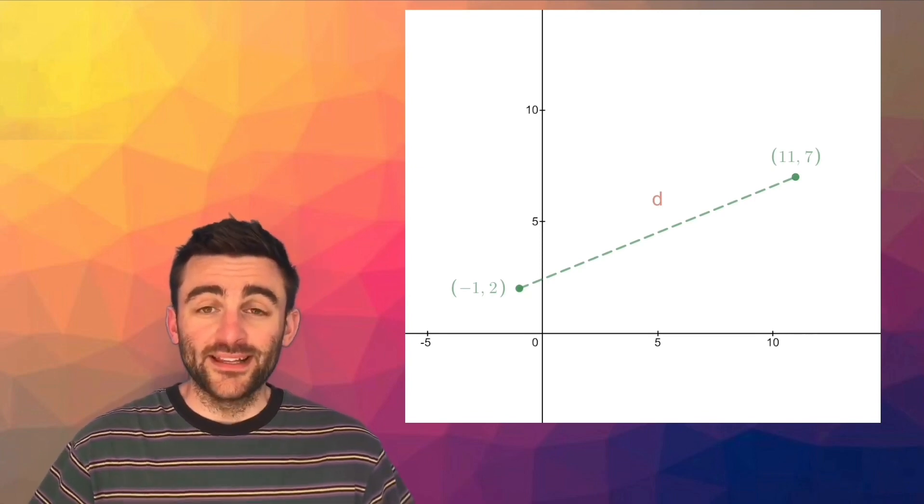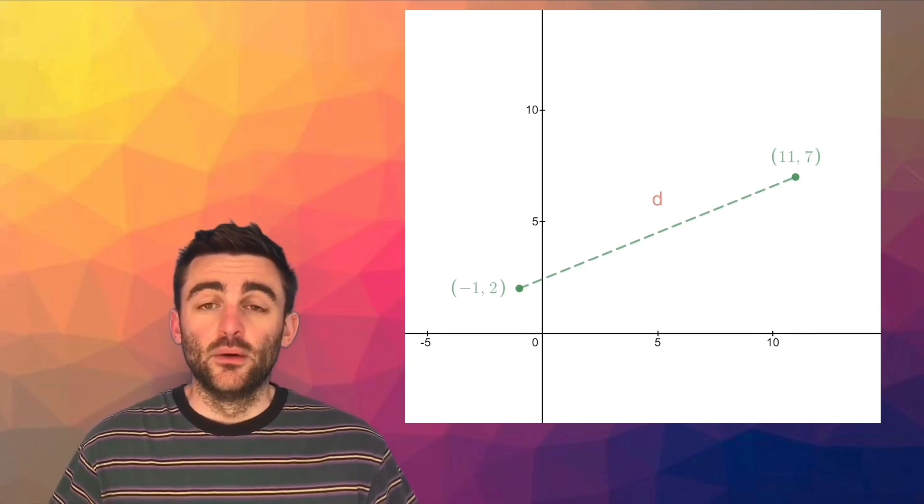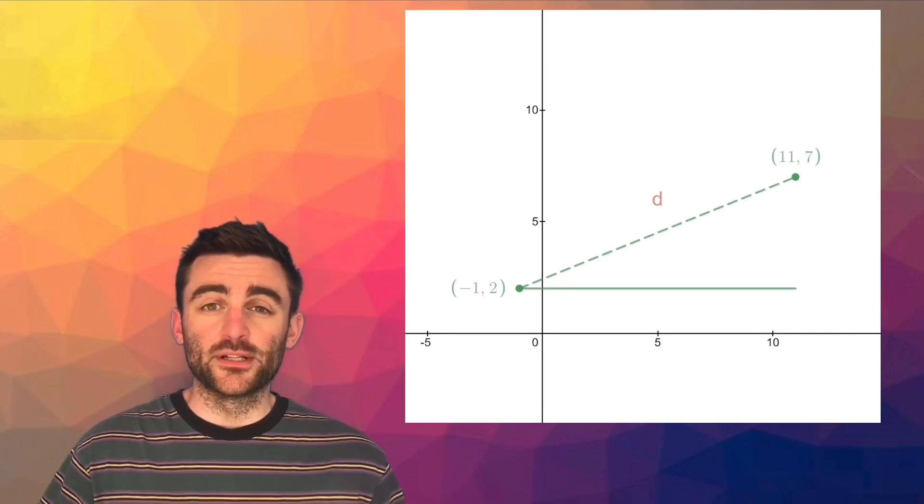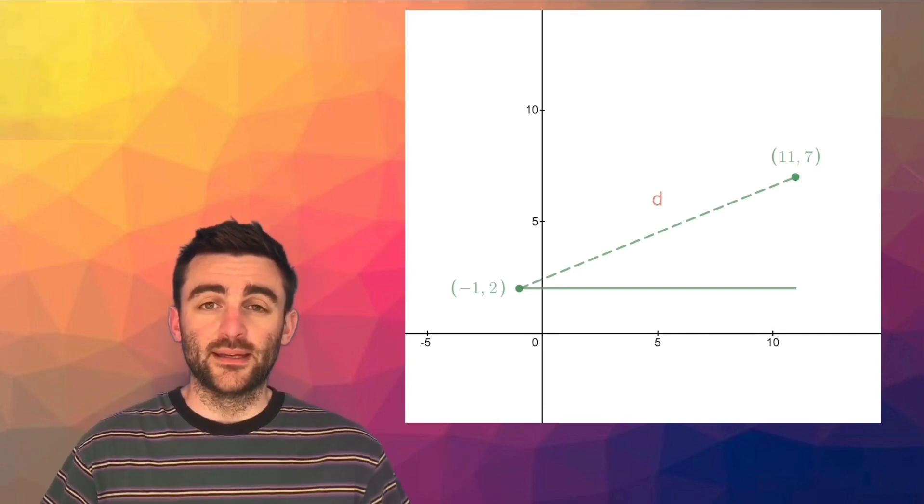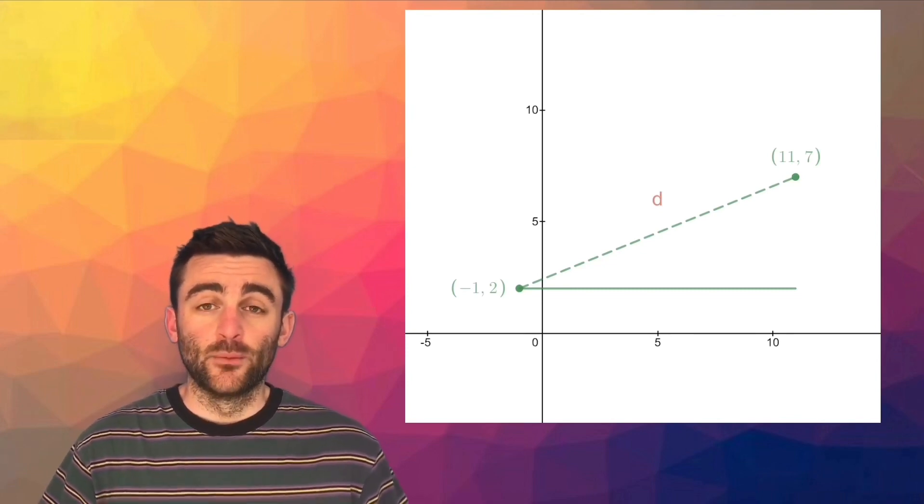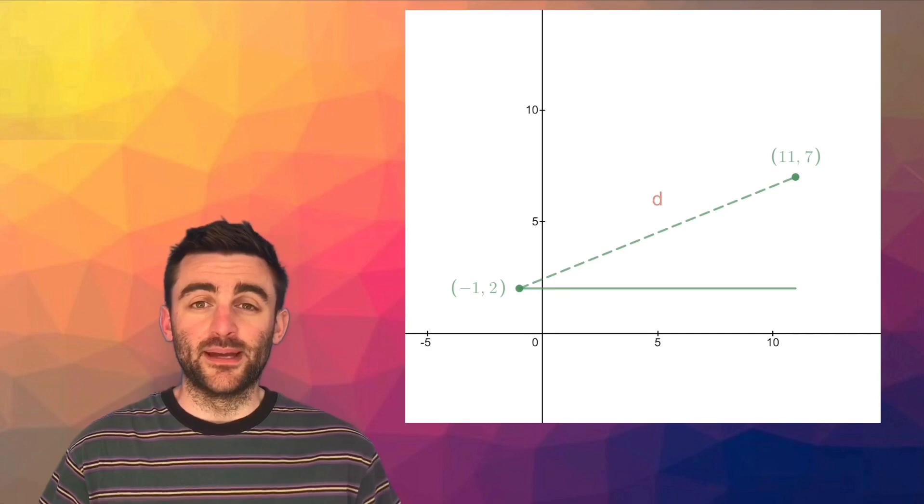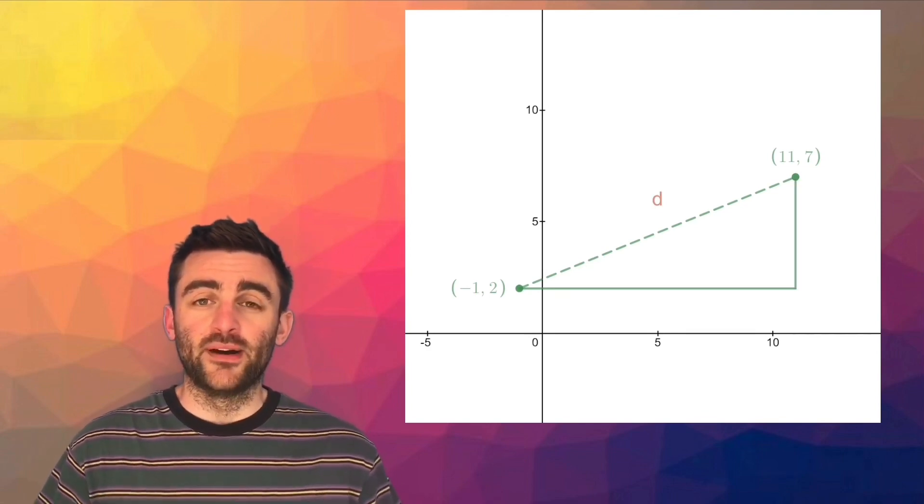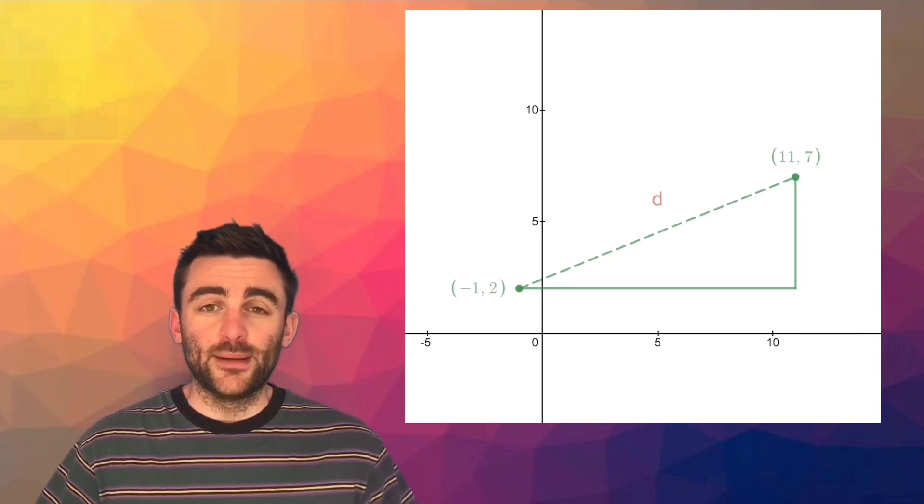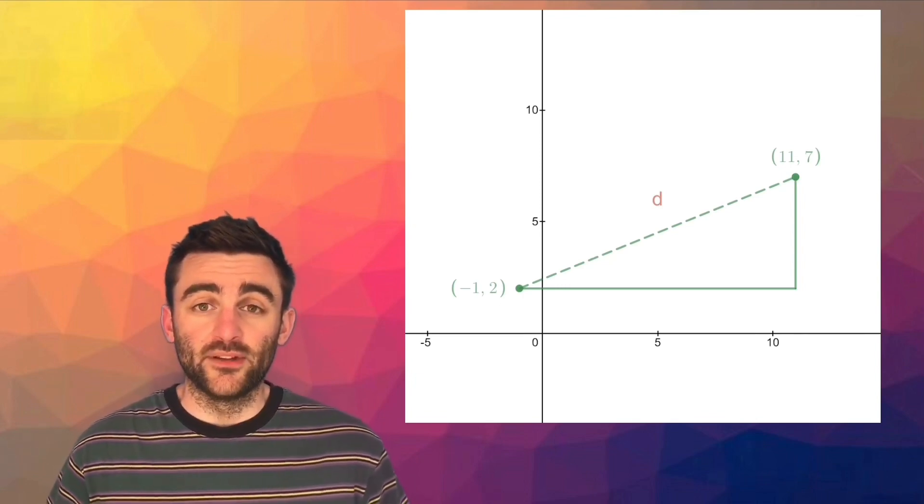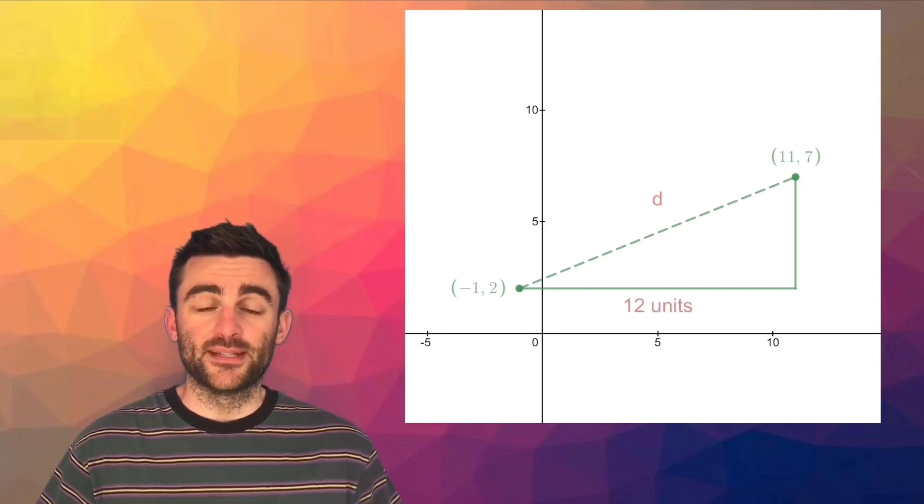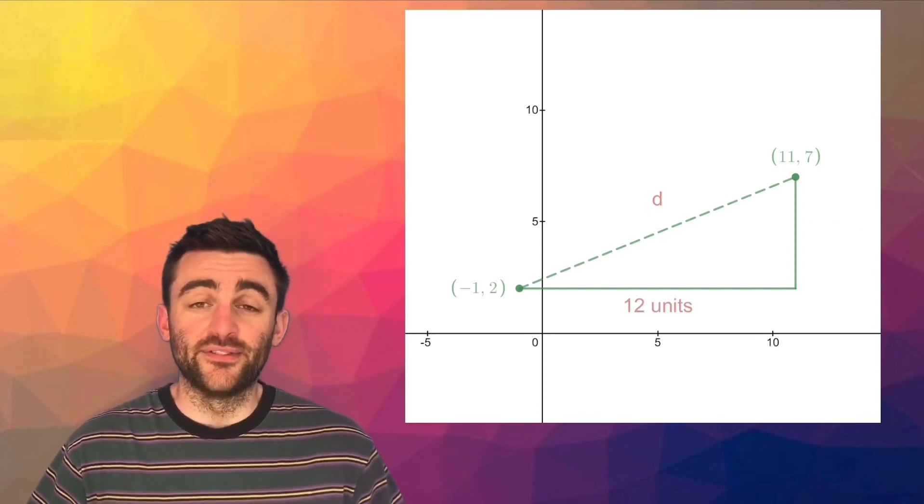In order to calculate the distance between the two points, we first inspect the x distance. That is the distance from the first x coordinate to the second x coordinate, which we can think of as simply being the horizontal. We then inspect the y distance. How far is it from one y coordinate to the other? In this diagram we can see that from negative 1 to 11 is a full distance of 12, and from 2 up to 7 is a total distance of 5.